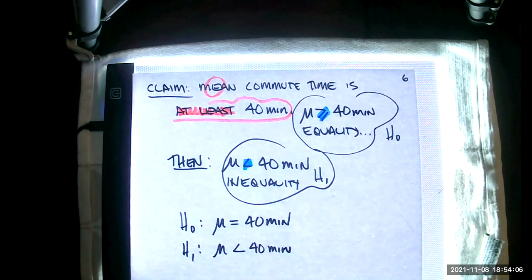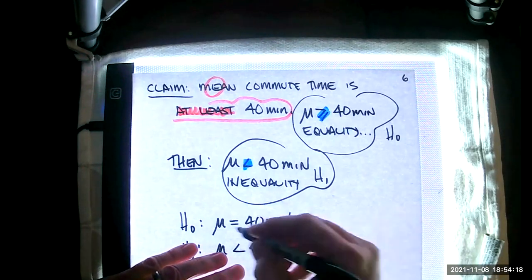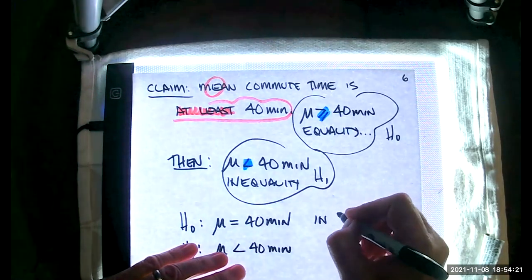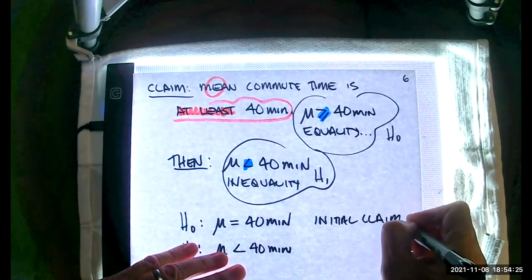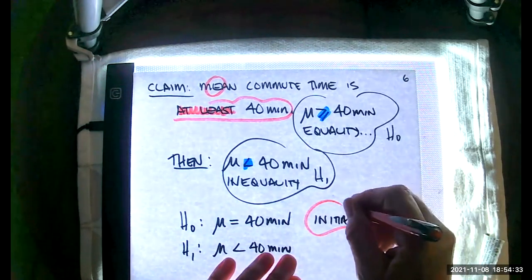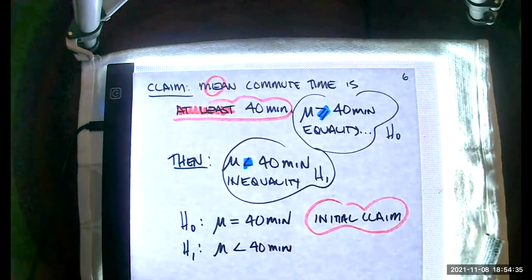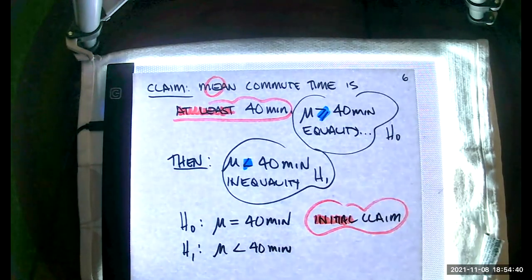I also like to note my initial claim, because the statement can land in either the null or the alternative hypothesis. I always like to know where my initial claim came down when I made my translation. In this case, my initial claim is H-naught, the null hypothesis. Eventually I have to address any claim directly, so I need to be able to identify that initial claim.